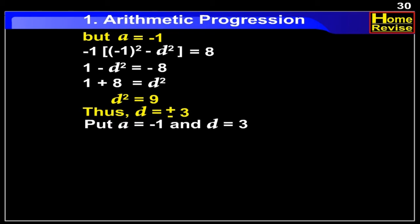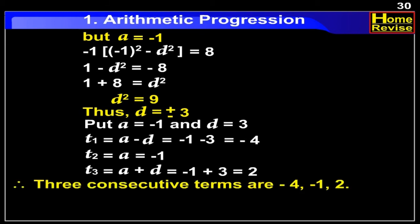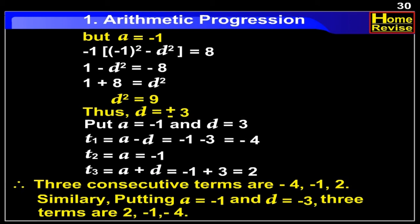Now, putting A equal to minus 1 and D equal to 3: T1 is equal to A minus D, which is minus 1 minus 3, equal to minus 4. T2 is equal to A, which is minus 1. T3 is equal to A plus D, which is minus 1 plus 3, equal to 2. Therefore, the three consecutive terms are minus 4, minus 1, and 2. Similarly, putting D equal to minus 3, the three terms obtained are 2, minus 1, and minus 4.